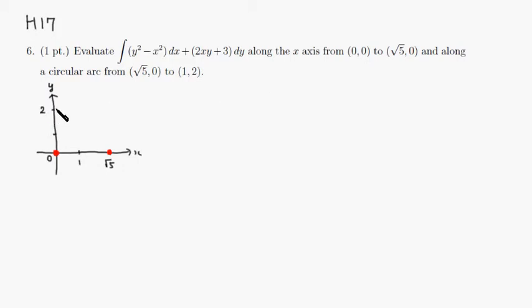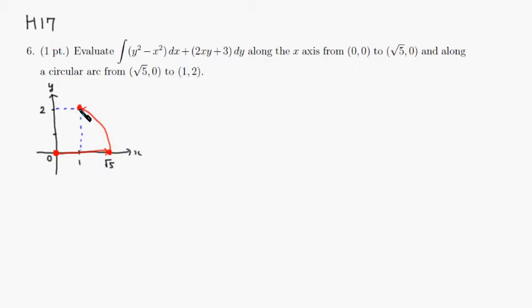This is the final point. So along this circular path, it's going to go this way and take a circular path to get to the final point. Let's add a path to complete it — make it a closed path. I'm going to add a path going straight from (1, 2) back to the origin. Let's call that path C.